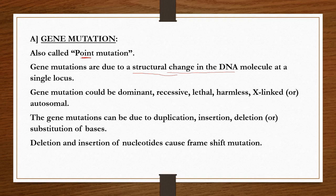Gene mutations could be dominant, recessive, lethal, harmless, x-linked, or autosomal. Dominant means the mutation may express its character; recessive means it is present but not expressed. Lethal mutations may lead to death; harmless mutations cannot cause any harm. X-linked means the mutation may be heritable through x-linked genes.